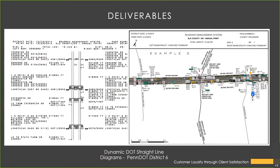Another deliverable example is a dynamic NJDOT straight-line diagram created using Esri applications. Straight-line diagrams show where signage and intersections are. By making it a dynamic map, users can now click on an actual sign and get directions to it, instead of using a counter wheel in the field to find mile markers. It's dynamic — they can make edits in the field, making it more than just a record document.